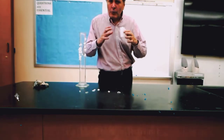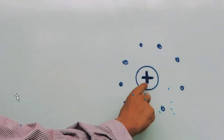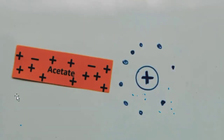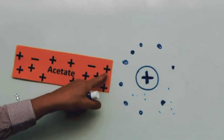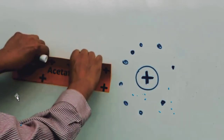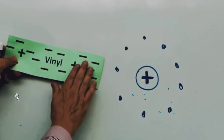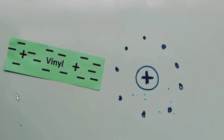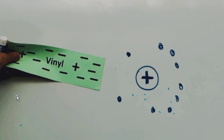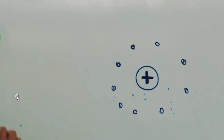Insulators do not have any free charges. Let us discuss this with atomic structure. An atom has a nucleus at its center with positive charges, surrounded by electrons. When we have a positively charged acetate plate, it attracts all the electrons — electrons get accelerated toward it. When we remove it, the electrons reassemble. When we keep the negatively charged vinyl sheet, the electrons are repelled to the other side. This is why charged materials repel and attract.